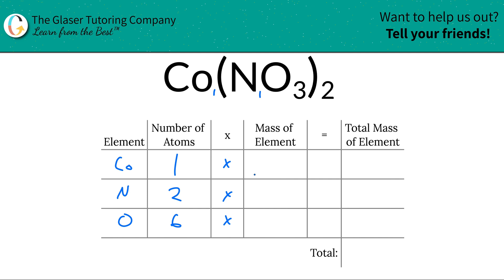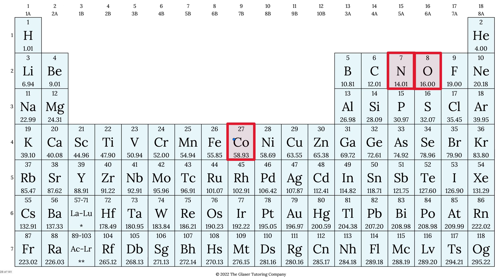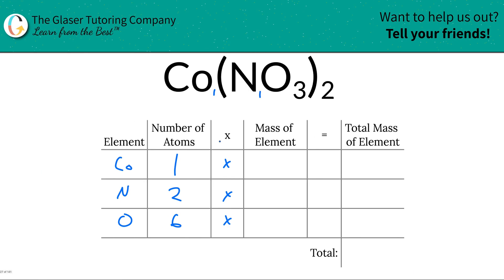Now what you would do is look up the mass of each element from the periodic table. So we've got cobalt here: 58.93, and nitrogen and oxygen's masses accordingly. The masses are in grams per mole or AMU, depending on whether you're talking about molar mass or molecular mass. So let's write these down: 58.93 for cobalt, 14.01 for nitrogen, and 16 for oxygen.